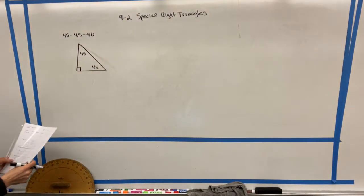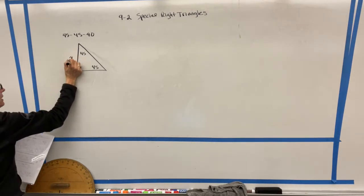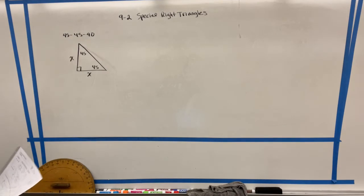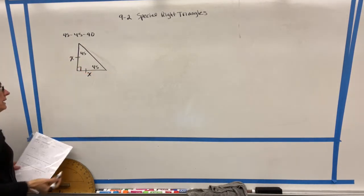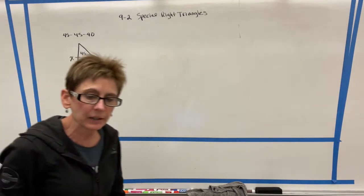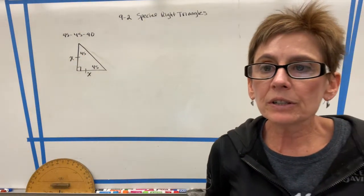Now, what we want to notice is that with a 45-45-90, the two legs are going to be the same. So we can put, if we want, like a little hash mark here and here to show ourselves that a 45-45-90 triangle is isosceles.